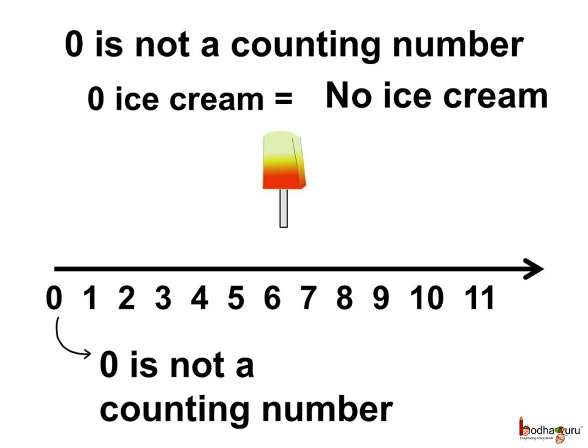Zero is not a counting number as we cannot count zero object. If there are zero ice creams, it means there is no ice cream. So we cannot count zero ice cream.